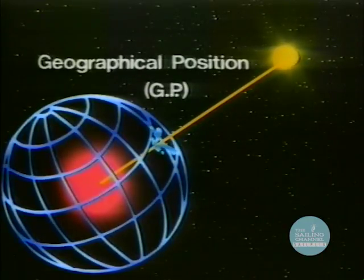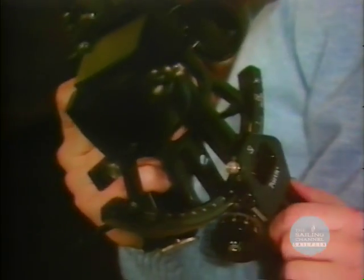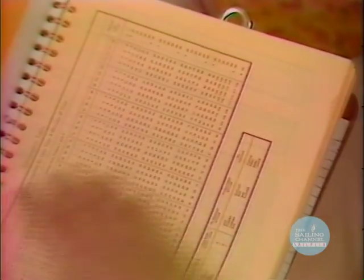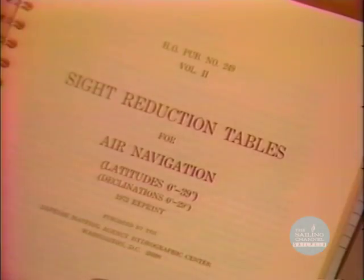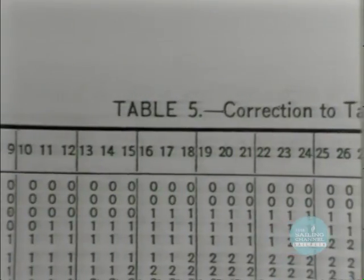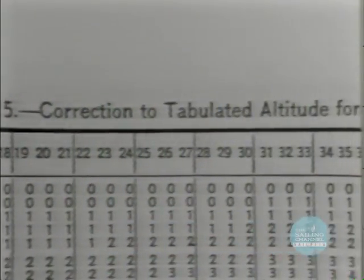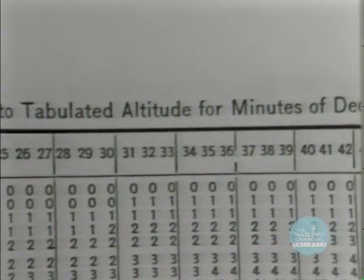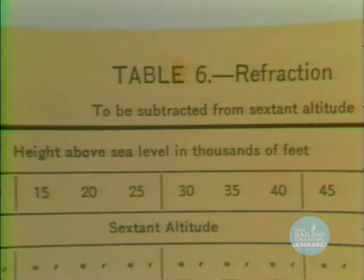This sextant is the instrument used to measure the angle between the horizon and the observed body. These are the HO249 site reduction tables, which go with the Air Almanac. The purpose of these tables is to give you the difference between the assumed position of your vessel and the actual position of your vessel based on the angle your sextant gives you.